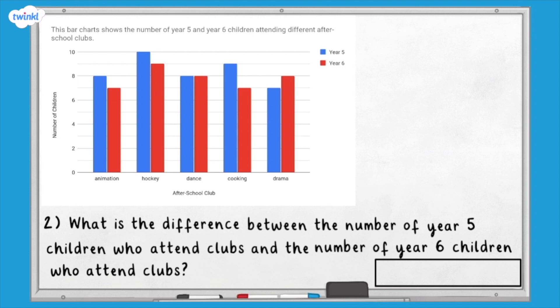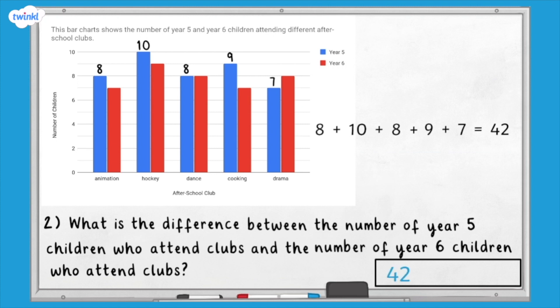Question two: what is the difference between the number of year five children who attend clubs and the number of year six children who attend clubs? This question isn't about a specific club, so we need to work out the information for each club first. Let's look at the blue bars: eight year five children attend animation club, ten attend hockey club, eight attend dance club, nine attend cooking club, and seven attend drama club. Eight add ten add eight add nine add seven equals 42. So 42 year five children attend after-school clubs.